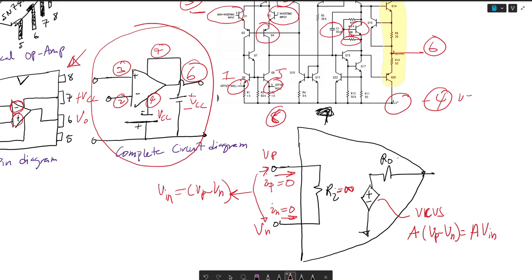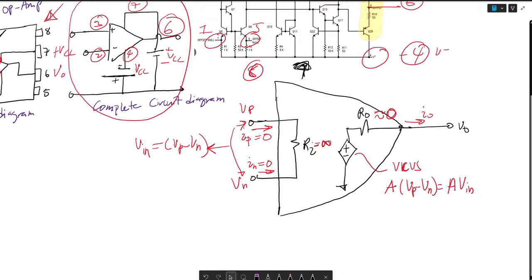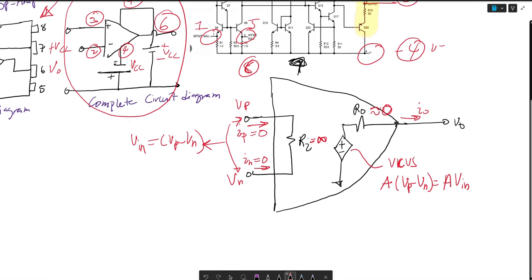This RO is very very close to zero ohms. Now we have our Vout which has an IO coming to it. The idea is that if we apply a small voltage VP minus VN here, we want to then amplify it by this gain A, where this gain is around 10 to the 8, or we call this infinity.